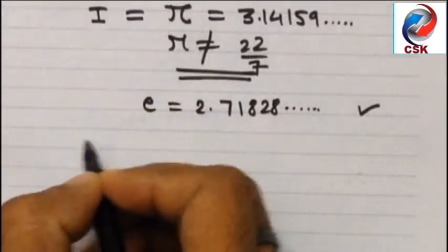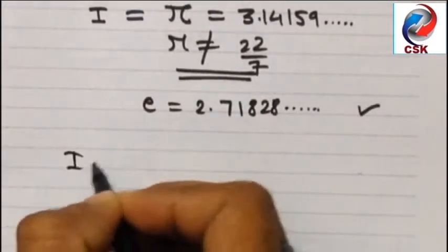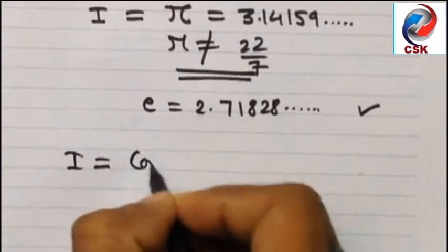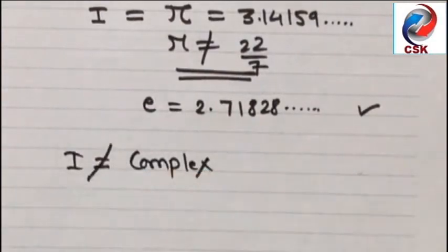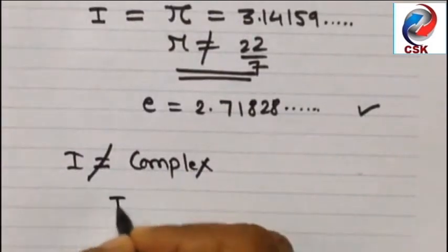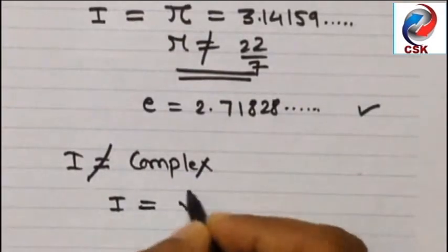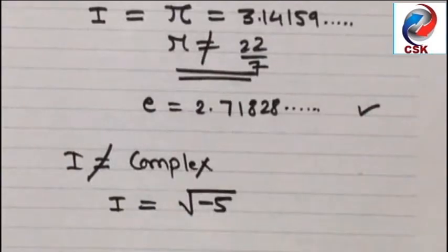Let's take an example. Let's say i is equal to negative of any value. So let's say root minus 5. So this is a complex number. This cannot be irrational number.